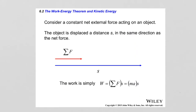Now let's see how the work done on an object is converted into kinetic energy — the energy of motion. Let's consider a constant net external force acting on an object, and the object is displaced a distance S in the same direction as the net force. The net force acts to the right, the displacement is also to the right, so the work done is the product of the net force and the displacement. From Newton's second law, the net force equals mass times acceleration, so the work done equals M times A times S.